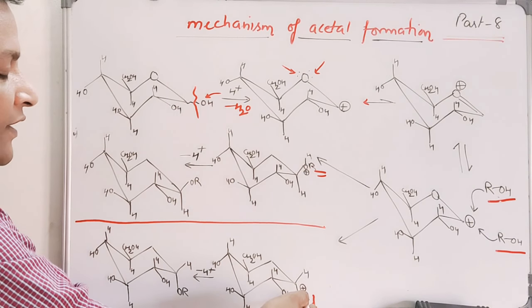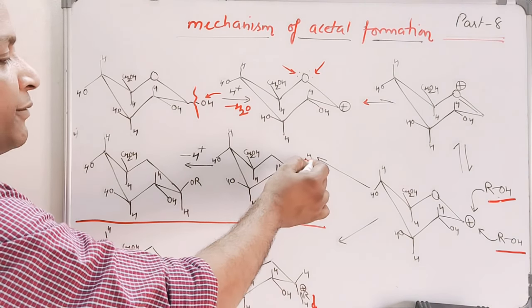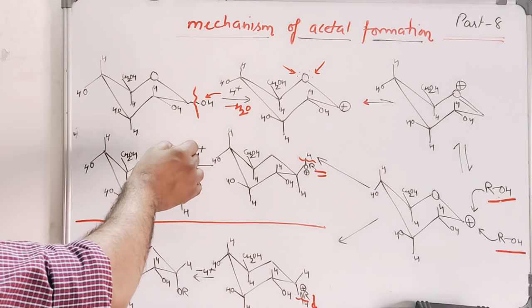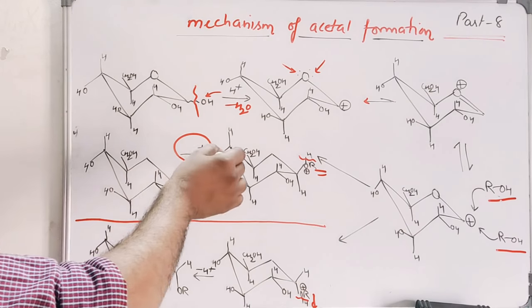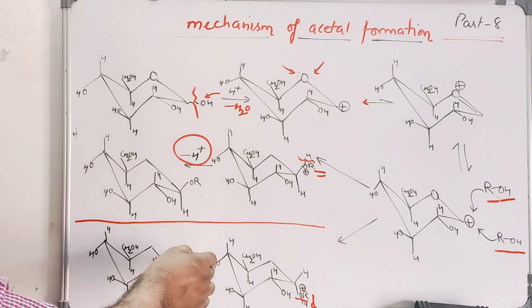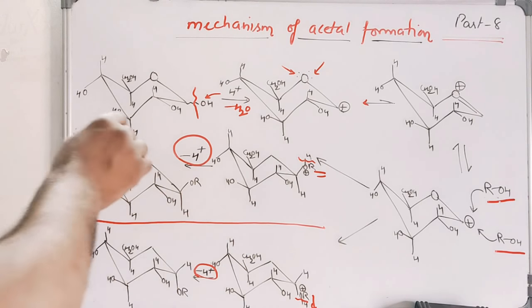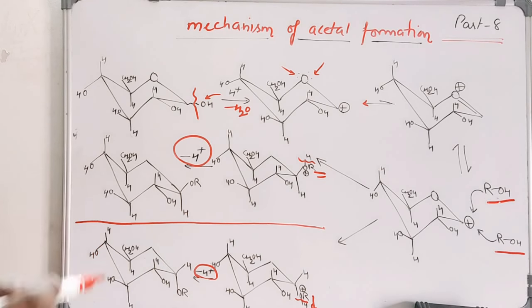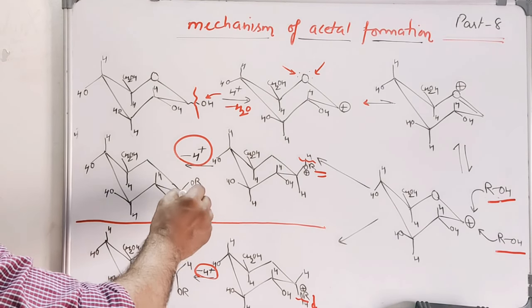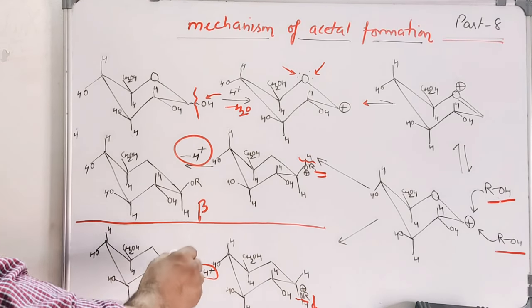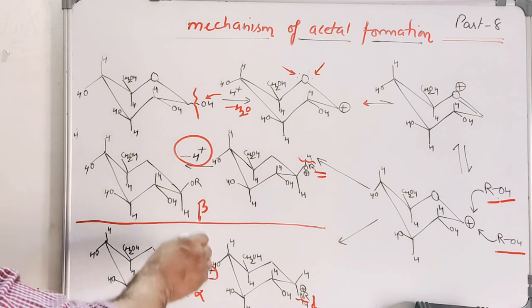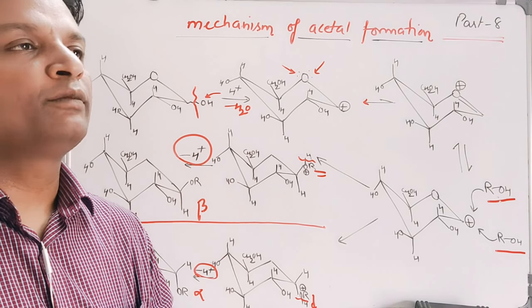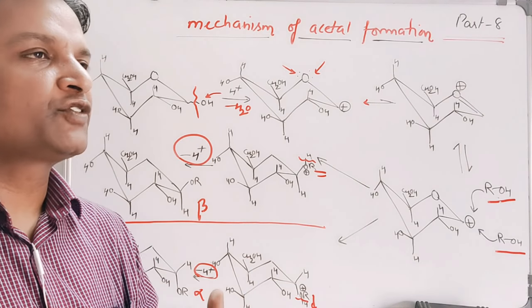We observe the formation of an ROH intermediate. From here, this H can be removed. In the next step, H⁺ is removed and we get the formation of OR. This OR in the beta configuration is the beta glycoside, and the other OR is the alpha glycoside. This is how acetals are formed from the hemiacetal structure.